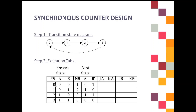For the decimal value, you need to list them based on the sequence — starting from the smaller number and ending with the largest number. So for this example, you have present state decimal: 0, 1, 2, and 3. And this is the binary representation: 0,0 is 0; 0,1 is 1; 1,0 is 2; 1,1 is 3. That is for the present state.